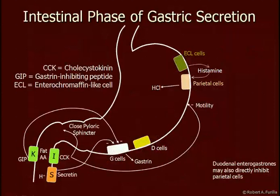The last phase is called the intestinal phase. Fats and amino acids entering the intestine trigger cholecystokinin from I cells. CCK enhances closing of the pyloric sphincter and inhibits motility of the stomach. Increased acid triggers secretin from S cells, which inhibits G cells. So when food enters the intestines, these enterogastrones act to slow down what's happening in the stomach.